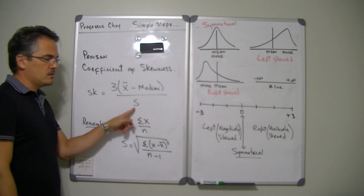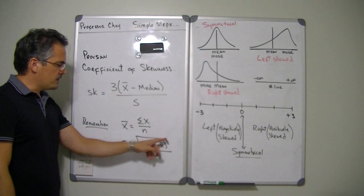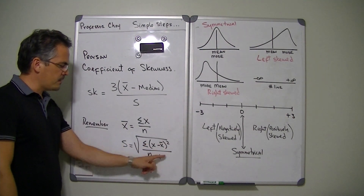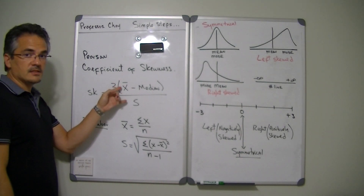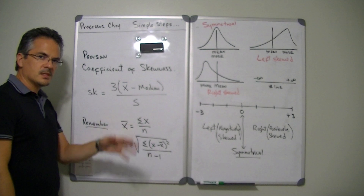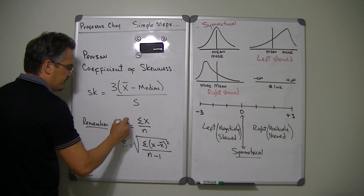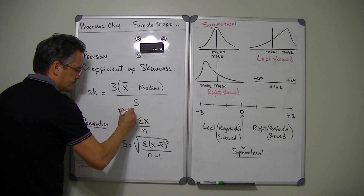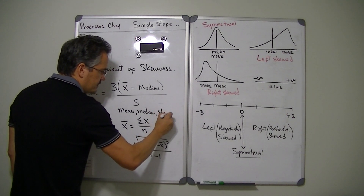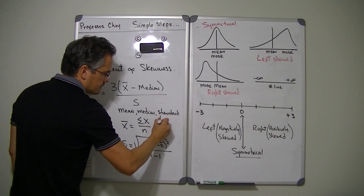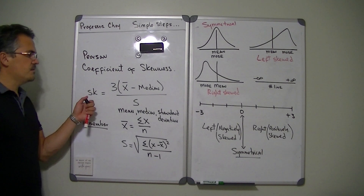The standard deviation, or sample standard deviation — this s right here — is the square root of the summation of (x minus x-bar) squared, divided by n minus 1. So the mean and the standard deviation are formulas themselves, and so is the median — there's a way to find it. In order to calculate the Pearson coefficient of skewness, you need to calculate the mean, the median, and the standard deviation, and then with those three pieces of data you can calculate it.